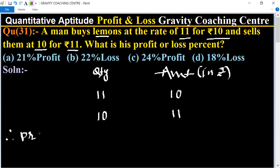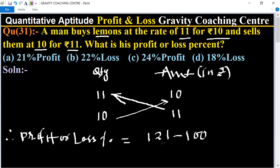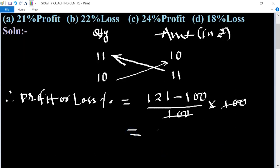For profit or loss percent, first we multiply 11 into 11, so its product is 121. And second, 10 into 10 equals 100. Then 121 minus 100 upon 100, multiply 100. So 100, 100 cancel, equals 21.